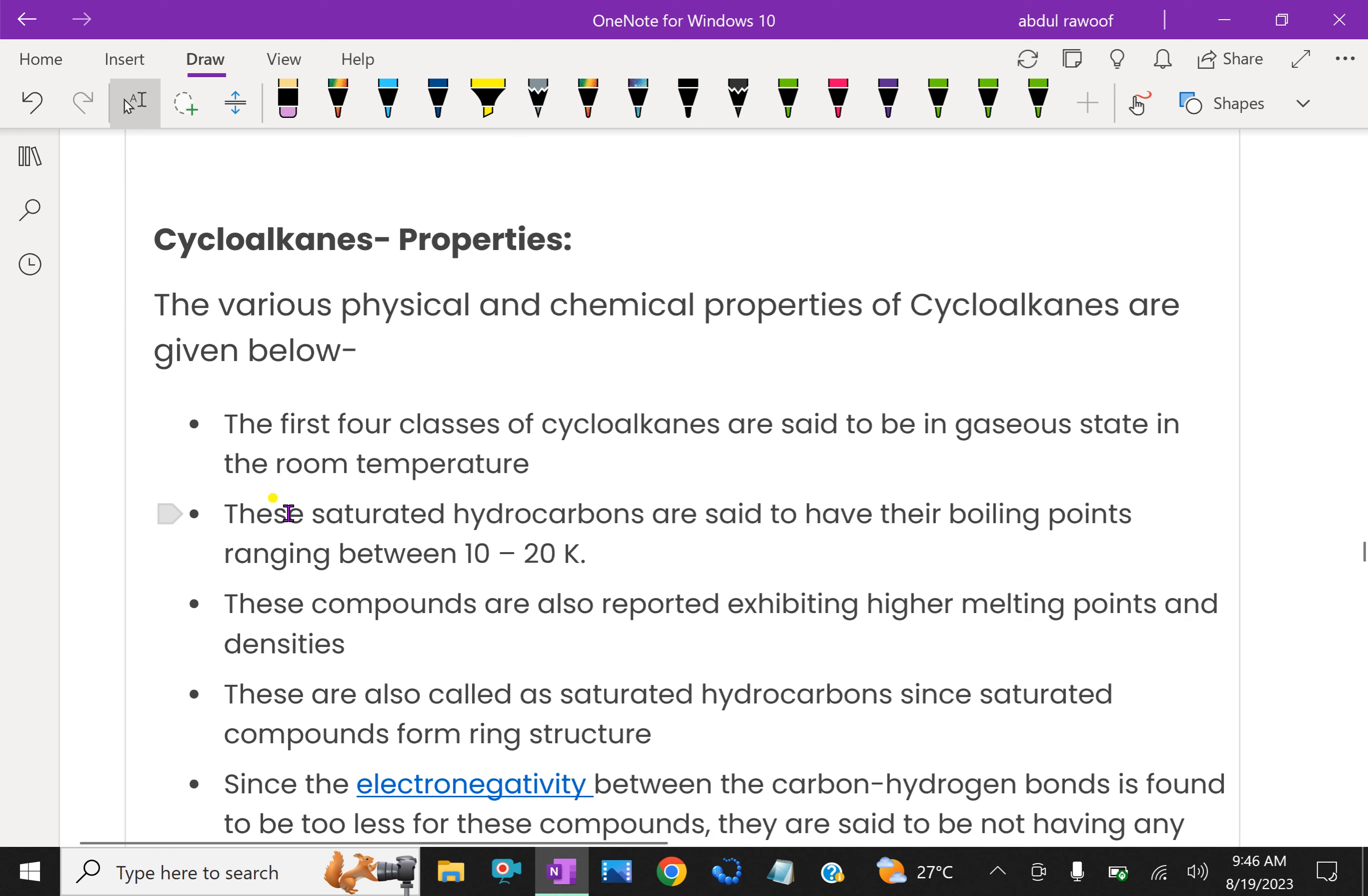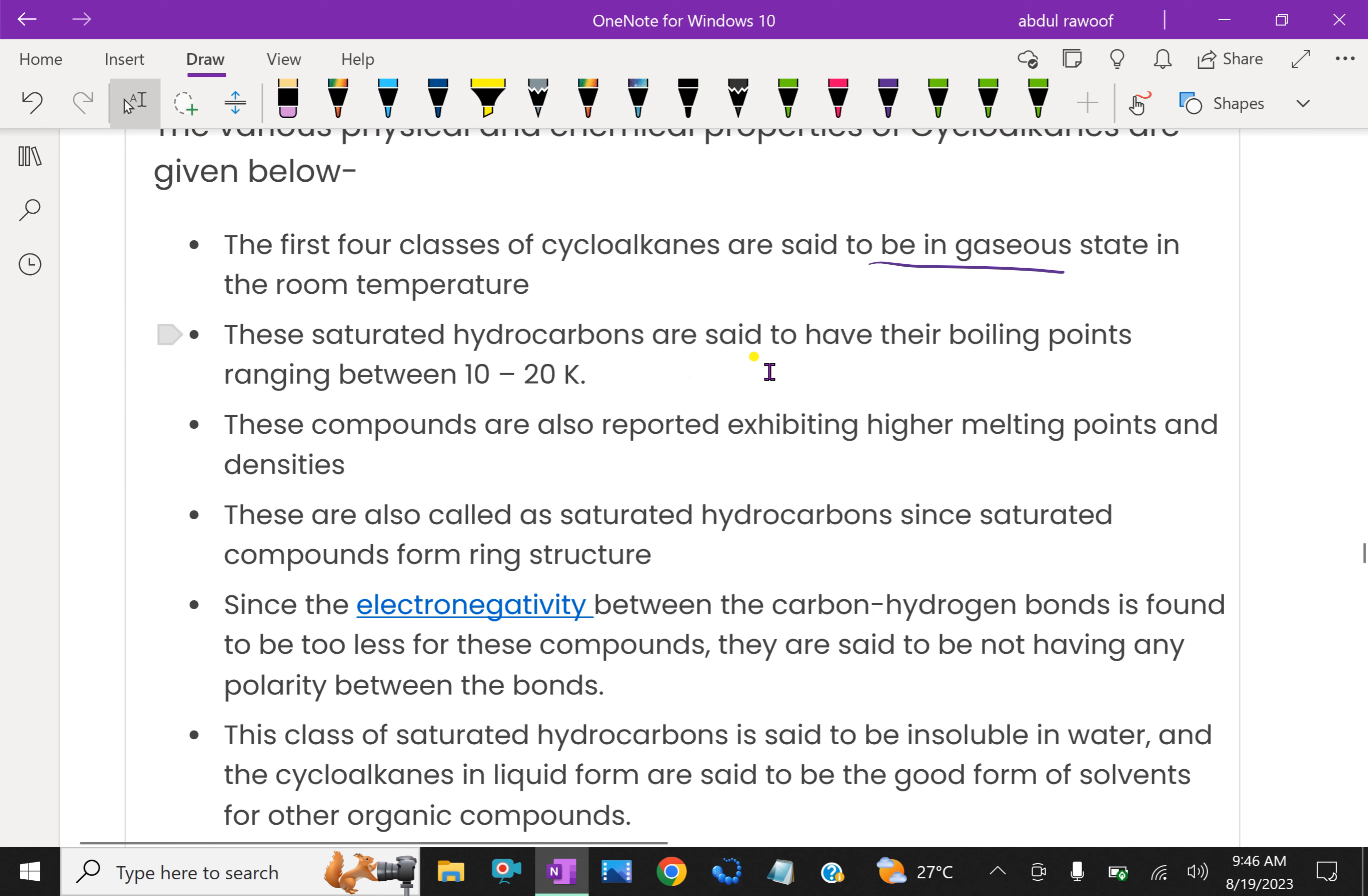Cycloalkanes and properties. The various physical and chemical properties of cycloalkanes are given below. The first four classes of cycloalkanes are said to be in gaseous state at room temperature. First four classes are in gaseous nature. These saturated hydrocarbons are said to have their boiling points ranging 10 to 20 Kelvin. This very less degree of boiling point. These compounds are also reported exhibiting higher melting points and densities.